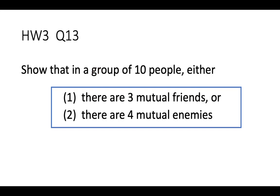The second question is similar to a problem we discussed in class. Here, we want to show that in a group of 10 people, where any two people are either friends or enemies — so any two persons A and B are either friends, or if not friends then enemies — we want to show that no matter what happens, we must either find 3 mutual friends or 4 mutual enemies.